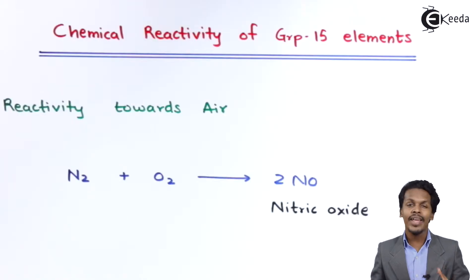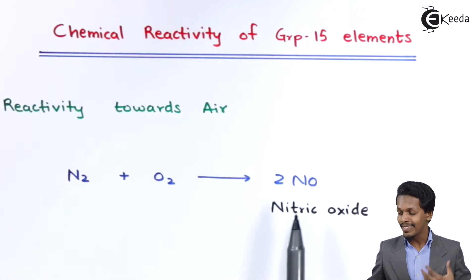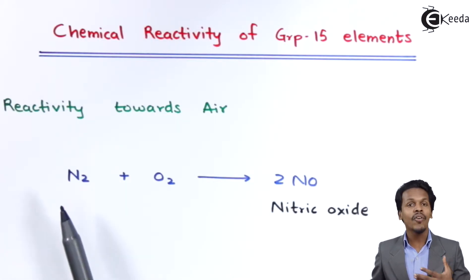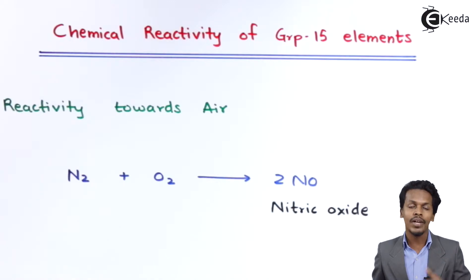This will require higher temperature as well as higher pressure. Only then can nitric oxide be obtained. This was a reaction of the group 15 element nitrogen.